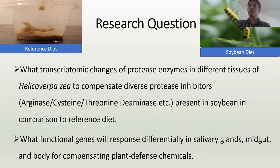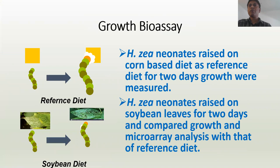Our research question is: what are the transcriptomic changes of protease enzymes in different tissues of Helicoverpa zea to compensate for these diverse protease inhibitors? And what functional genes respond differently in tissues such as salivary glands, midgut, and body to compensate for these plant chemicals?